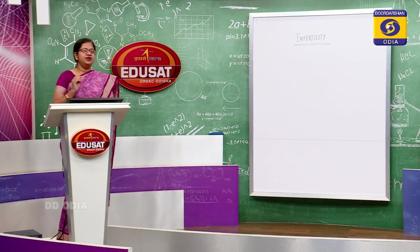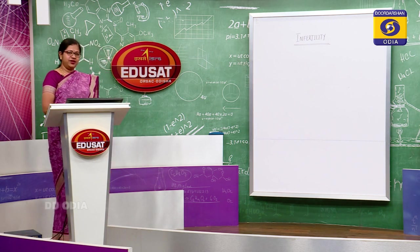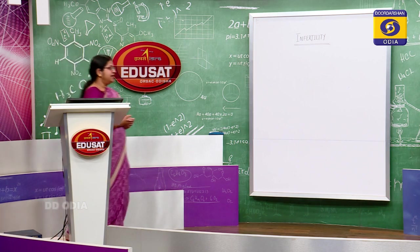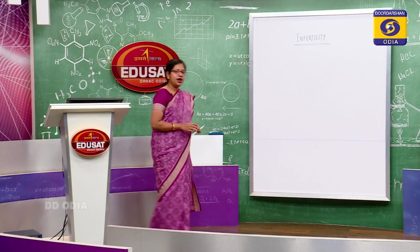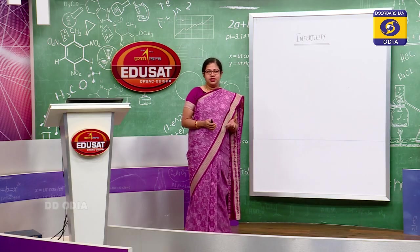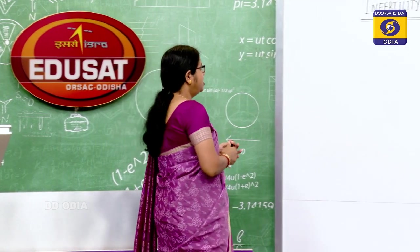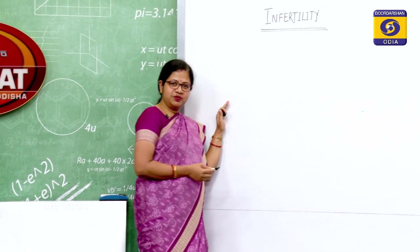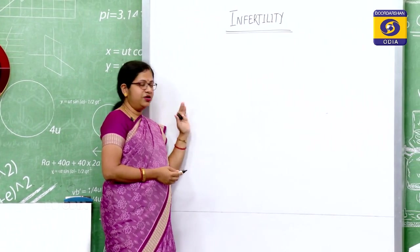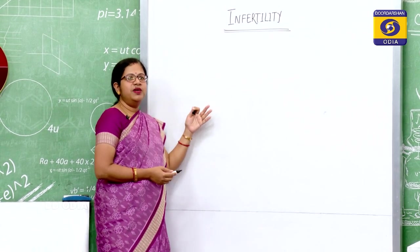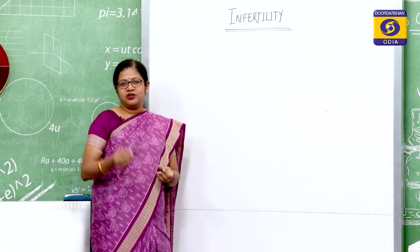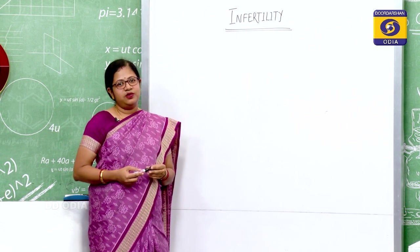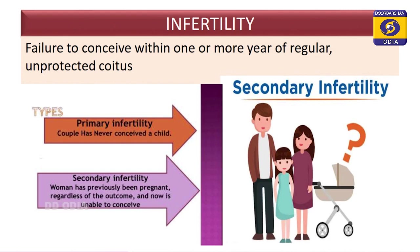Today we will discuss a very interesting topic which is infertility. In our last class we read about reproductive health and how to control population explosion. One aspect of reproductive health was to decrease population explosion or to maintain a constant population. The other aspect is if we do not have fertile individuals then the birth rate might go down, leading to a different kind of imbalance — infertility.